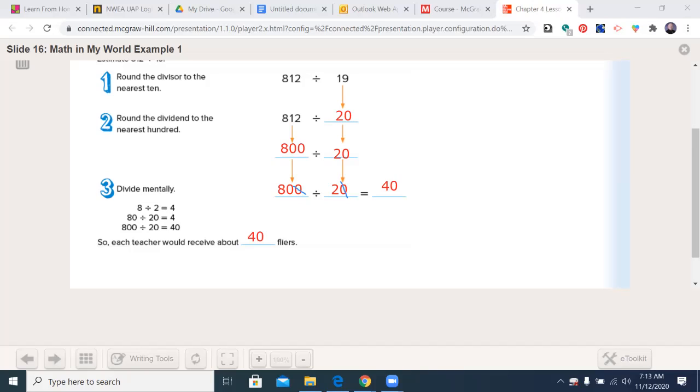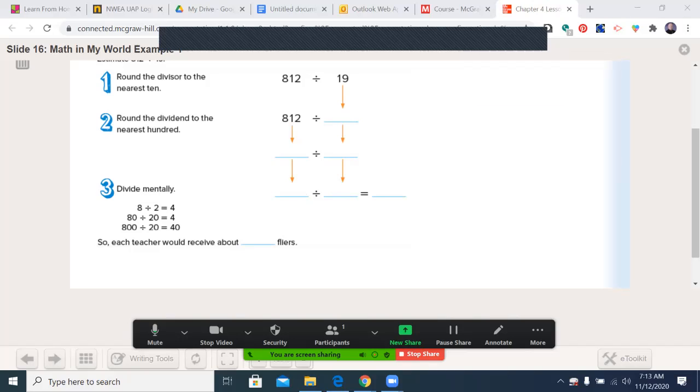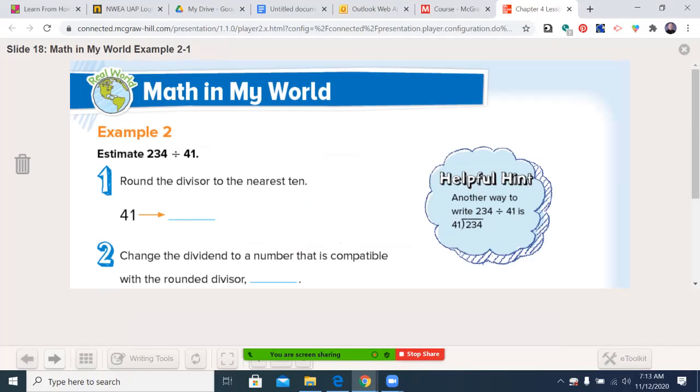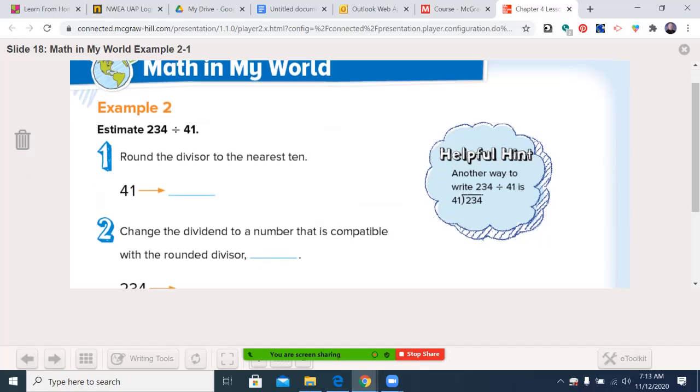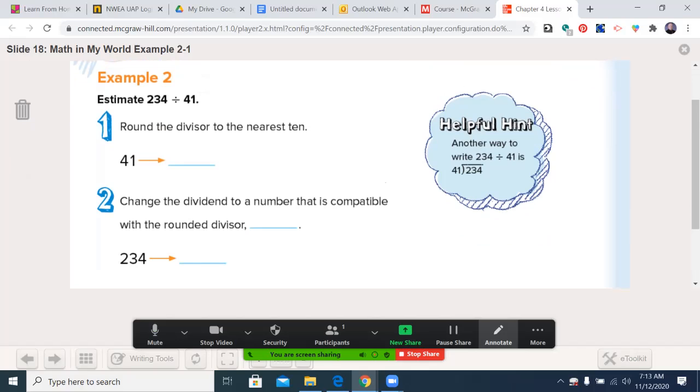All right, let's move forward here by clearing my drawings. And we'll move to the, you see the answer key there. Let's move to the top of 252, example niche. Helpful hint, another way to write 234 divided by 41 is like this, and that's what I talked about earlier. Estimate 234 divided by 41. You can see our first two steps here.